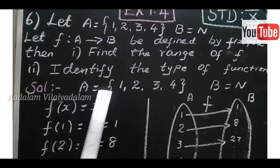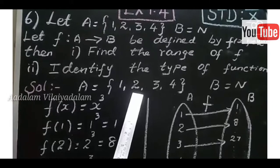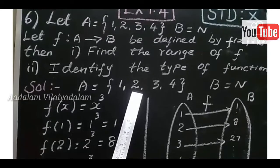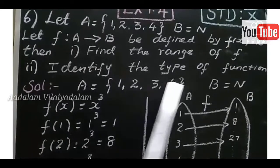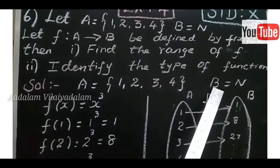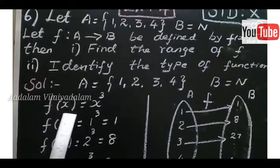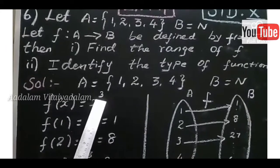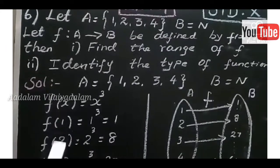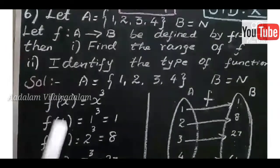Here, the domain value is given A equal to {1, 2, 3, 4}. B is the natural numbers. F of X value is X cube, so F of X gives the range value.